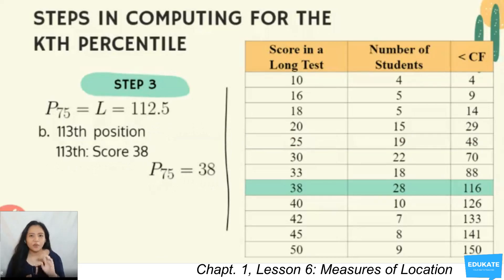How about if we have computed for a decimal value location? We're going to look at the 113th position, the next whole number, so we're rounding up, that falls in the less than cumulative frequency row of 116. So, our P75 is 38. If we have here the P75 as 38, that means it's also decile 7.5 and quartile 3.